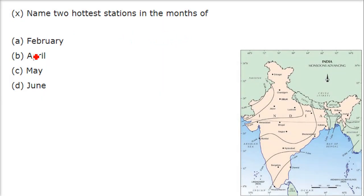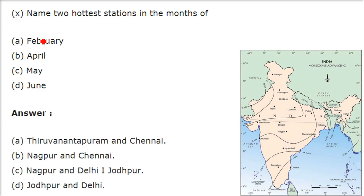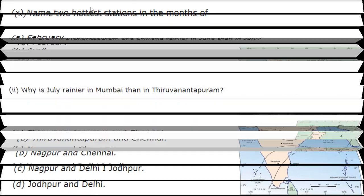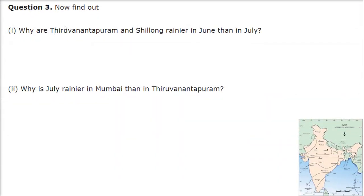Name two hottest stations in the month of February — Thiruvananthapuram and Chennai. April — Nagpur and Chennai. May — Nagpur, Delhi, and Jodhpur. And June — Jodhpur and Delhi.